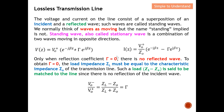Only when the reflection coefficient Γ is equal to zero is there no reflected wave. When Γ = 0, I only have the purely incident wave. In order to obtain Γ = 0, the load impedance Z_L must equal the characteristic impedance Z₀. When they are equal, their difference is zero and therefore the reflection coefficient becomes zero. Such a load is said to be matched to the line, since there is no reflection of the incident wave.